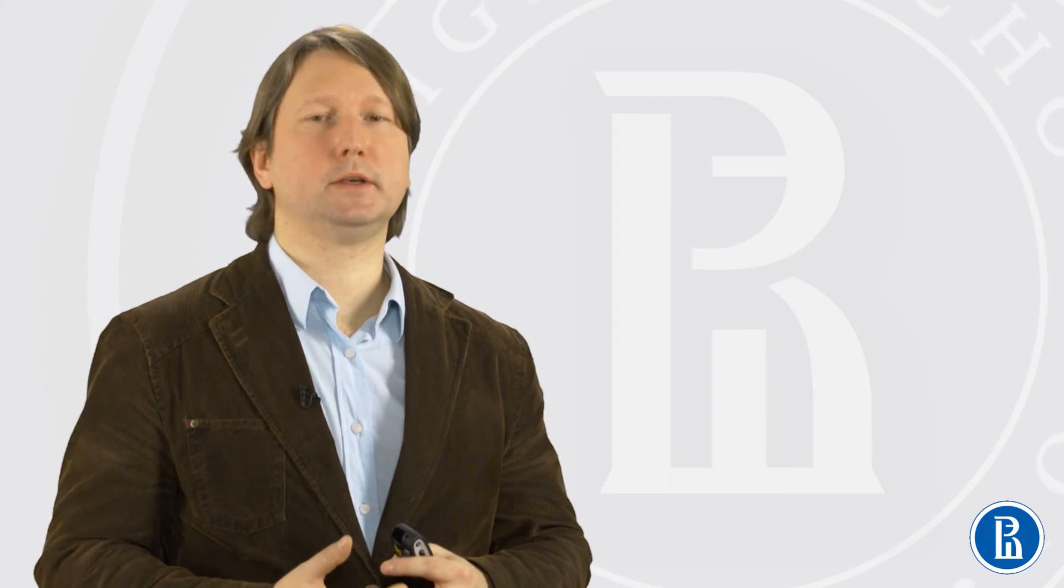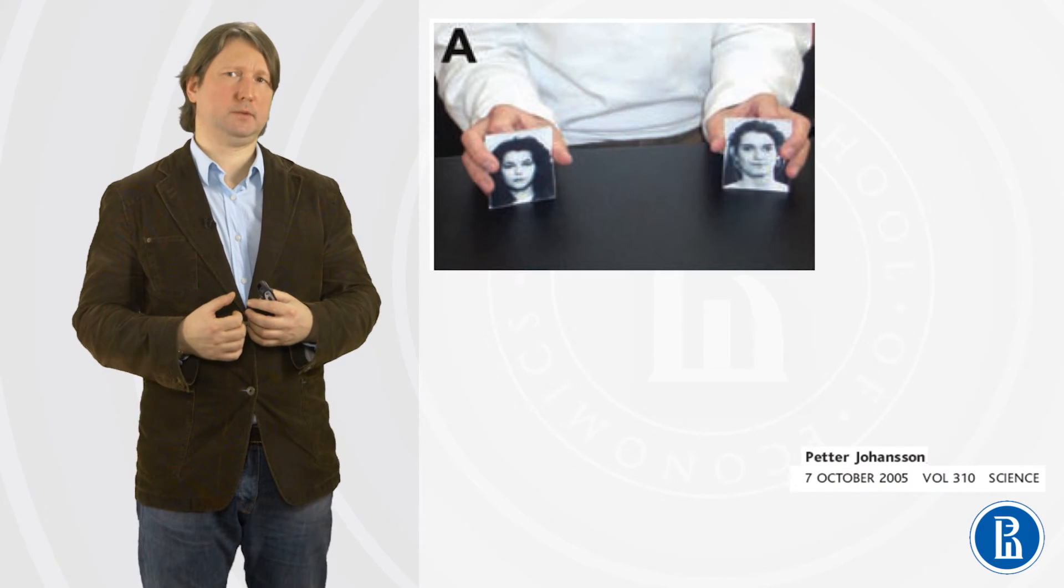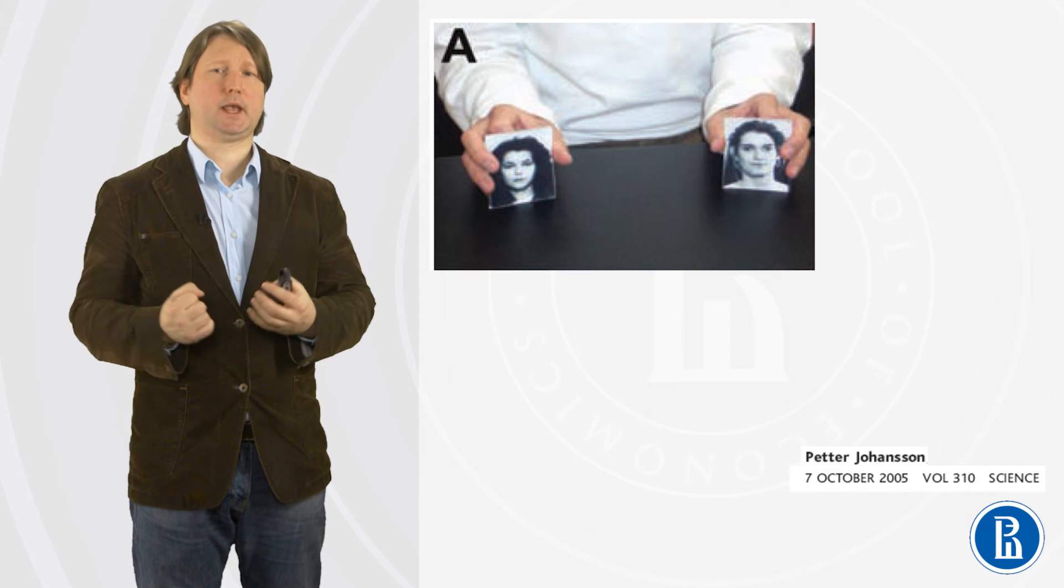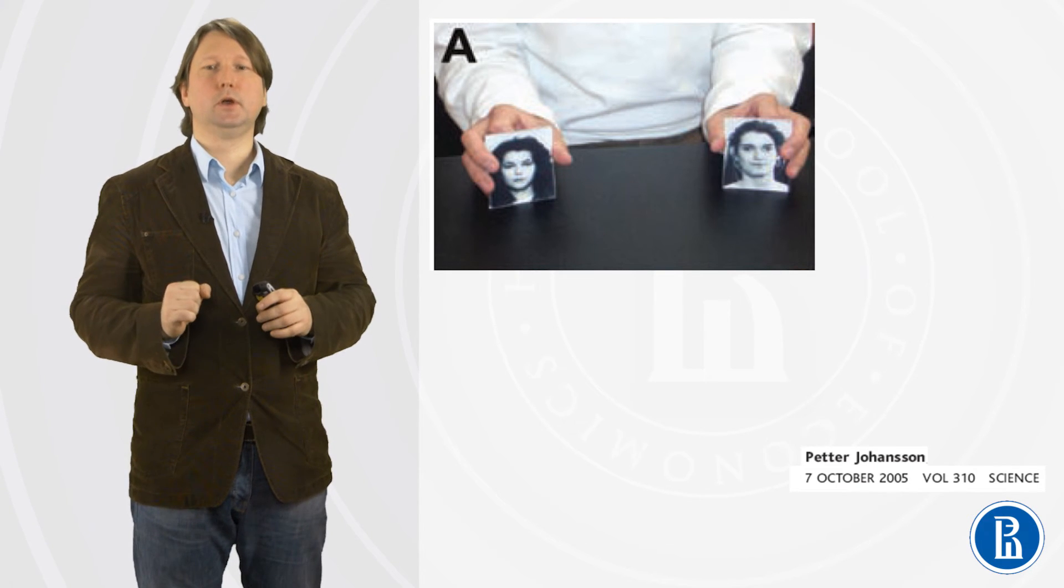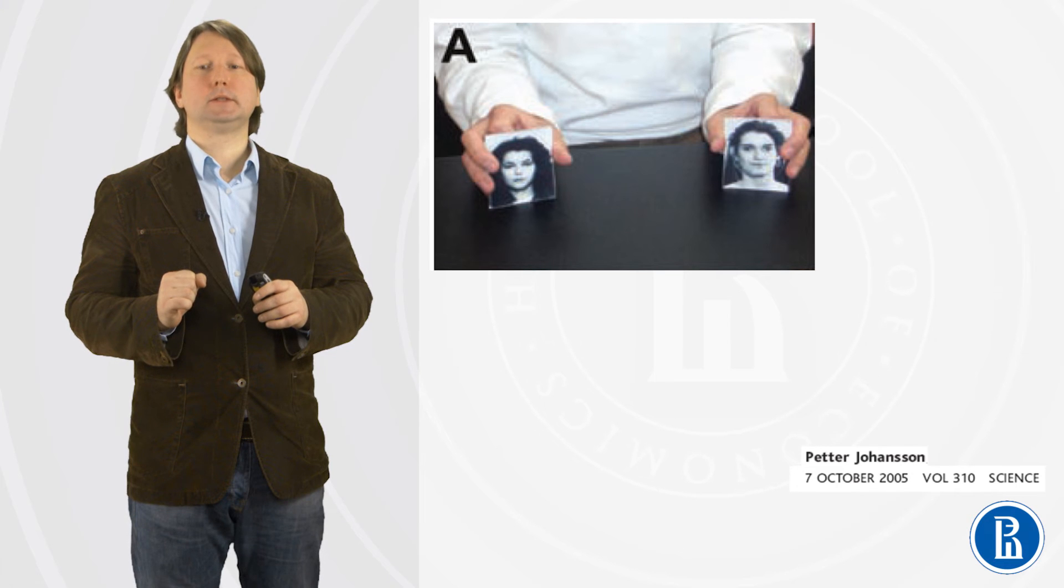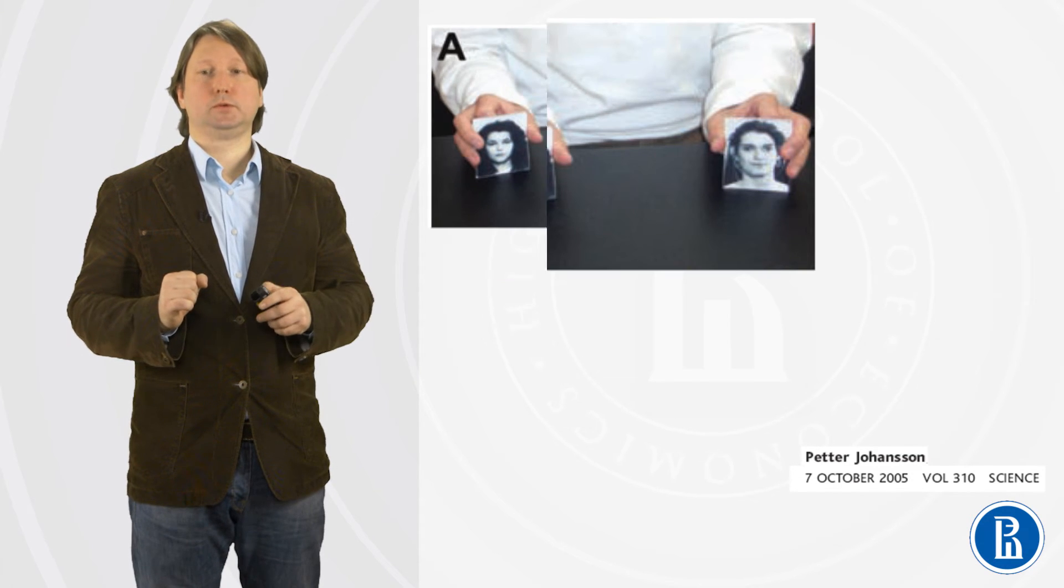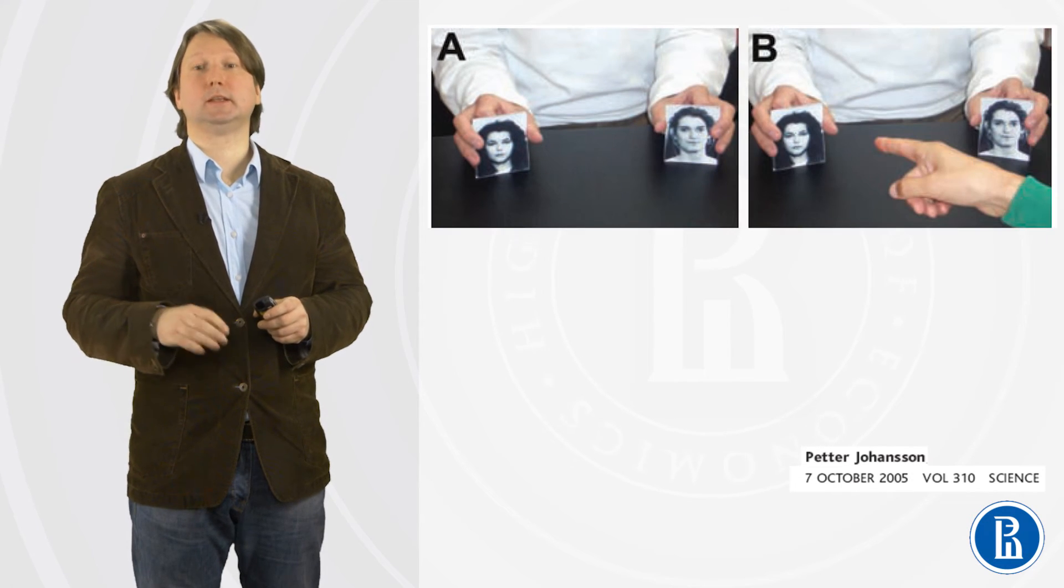I would just give you a famous psychological example illustrating choice blindness, so-called choice blindness. Imagine a subject has to select between two photos. You see two females. You can select between these two photos. For example, a subject selected left photo.